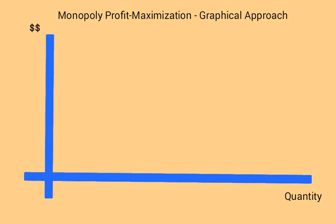So let's graph the revenue curves first of all. We have a downward sloping demand curve. Let's say that the demand curve looks like this for the monopolist.